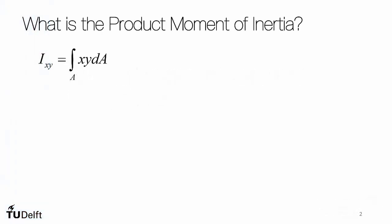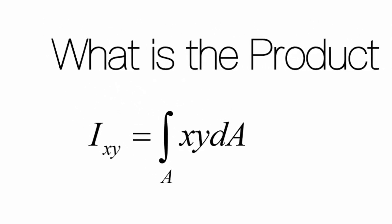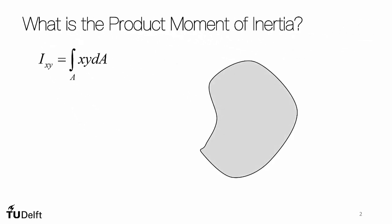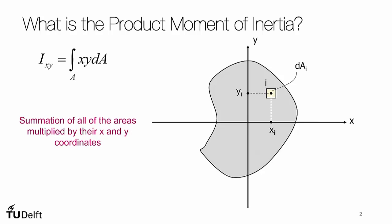What is the product moment of inertia? Well, mathematically, the product moment of inertia is the integral of x times y times a differential area moment over an entire domain. So if we have an arbitrary cross-section and we give it an xy-coordinate frame, what we are really doing is looking at small area elements dA and multiplying that area by its y-coordinate and its x-coordinate. And we sum all of these areas over the entire domain.